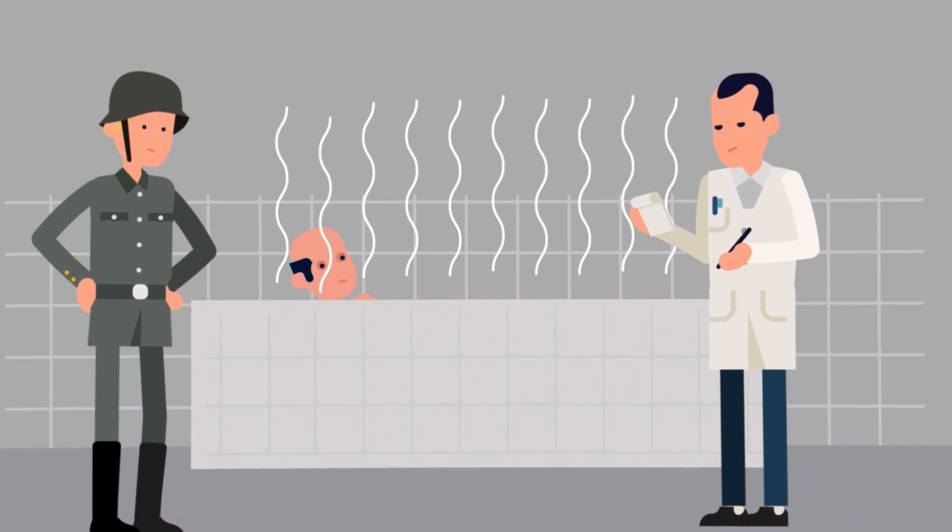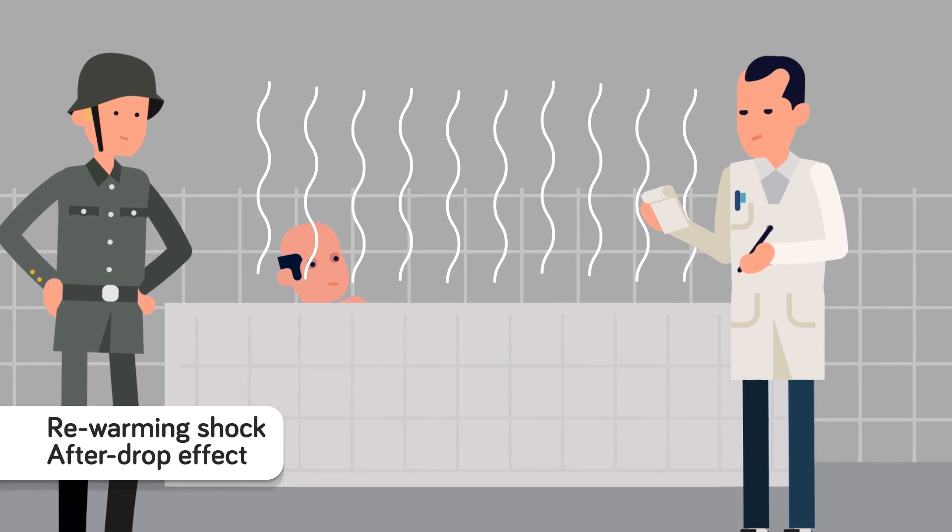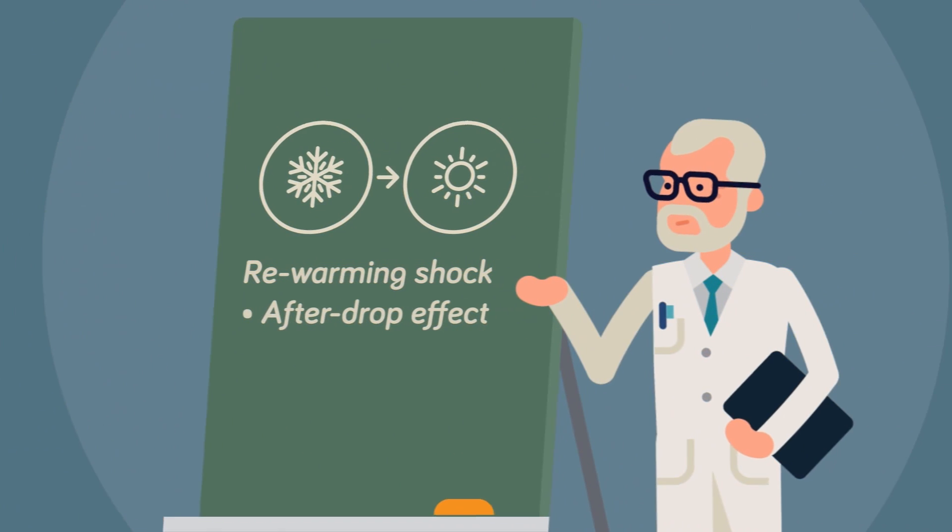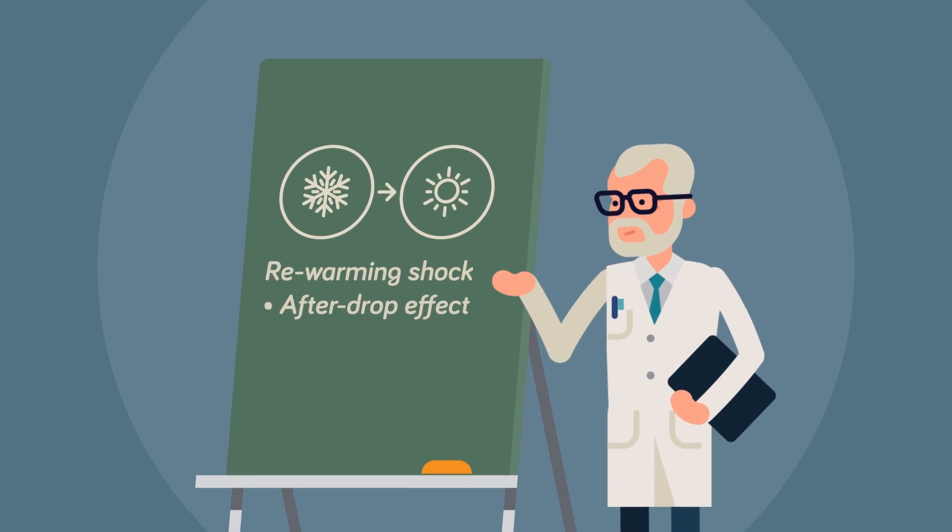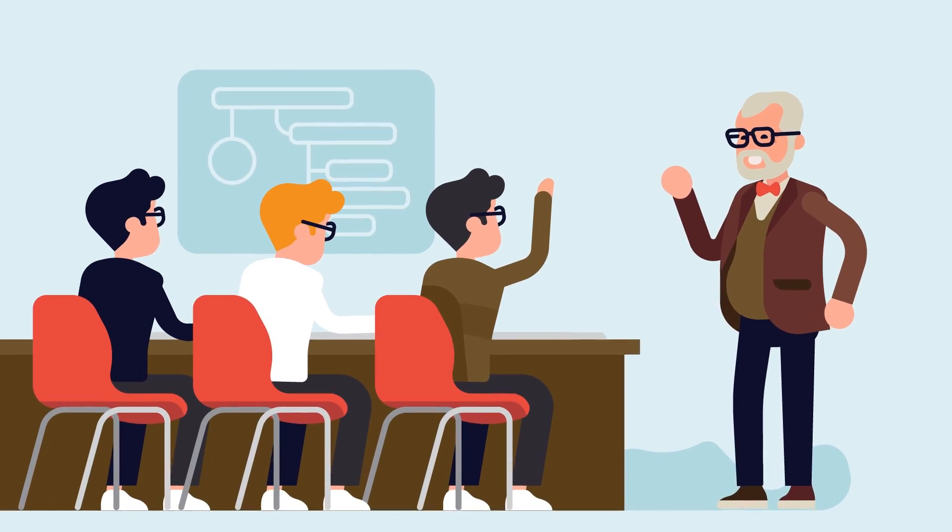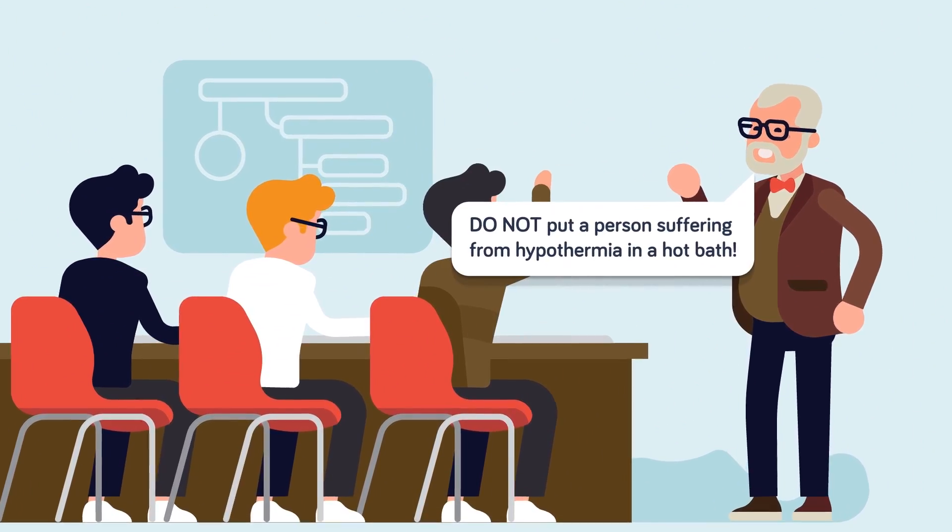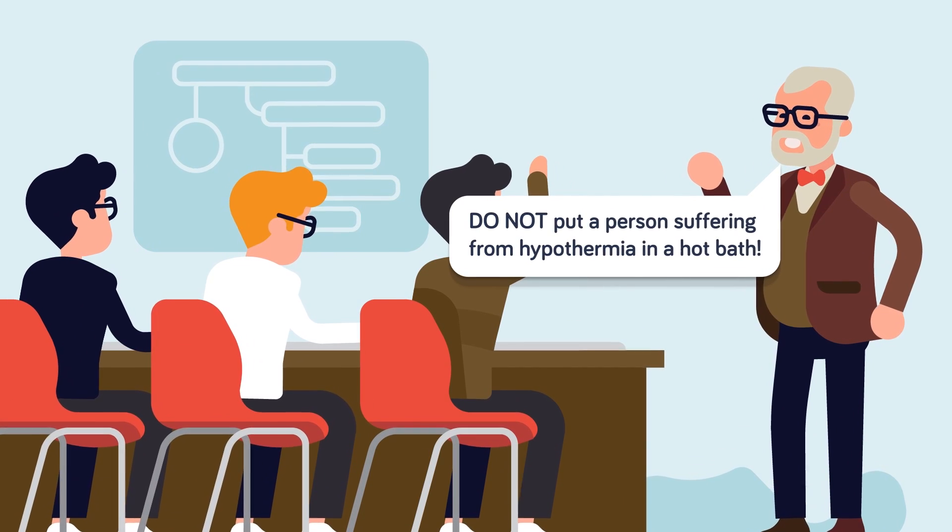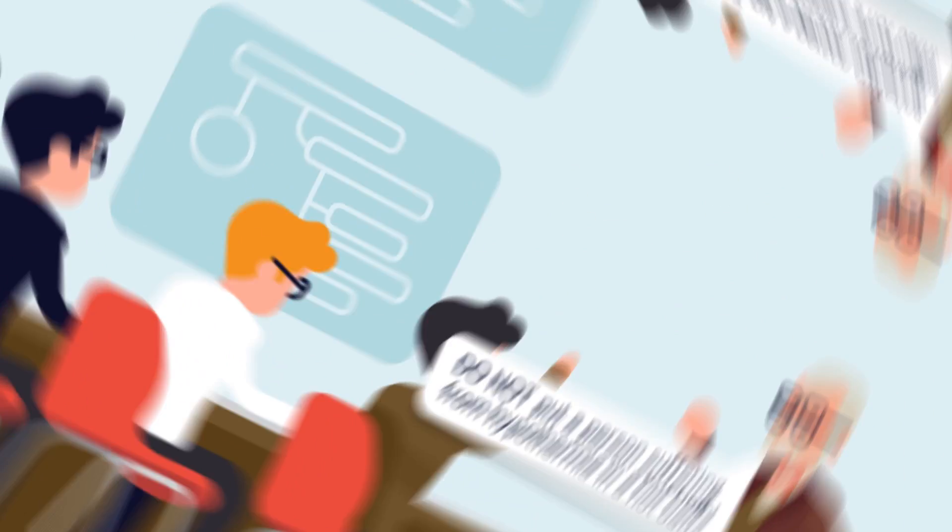One of the ways the Nazis warmed prisoners up was by immersing them in hot water, but that was too very dangerous. It produces a kind of shock, what we now call rewarming shock, or the after drop effect. You can look at any medical website these days and it will tell you that if you are dealing with a person suffering from hypothermia, do not put them in a hot bath. Instead, passively warm them using dry, unheated blankets.